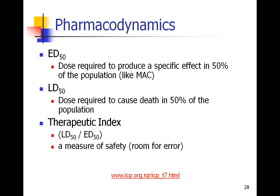And then there's the LD50, the lethal dose at 50% — the dose required to cause death in 50% of the population. If we compare these two numbers, hopefully they're pretty far apart, and we can make what's called the therapeutic index, which is a measure of safety. It tells us how much room we have for error between the effective dose and the lethal dose.